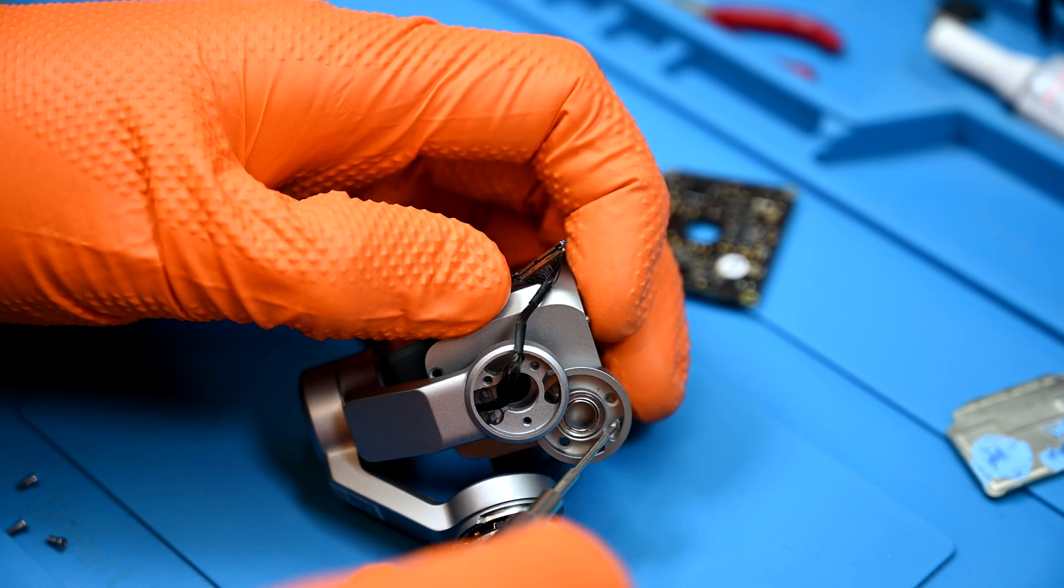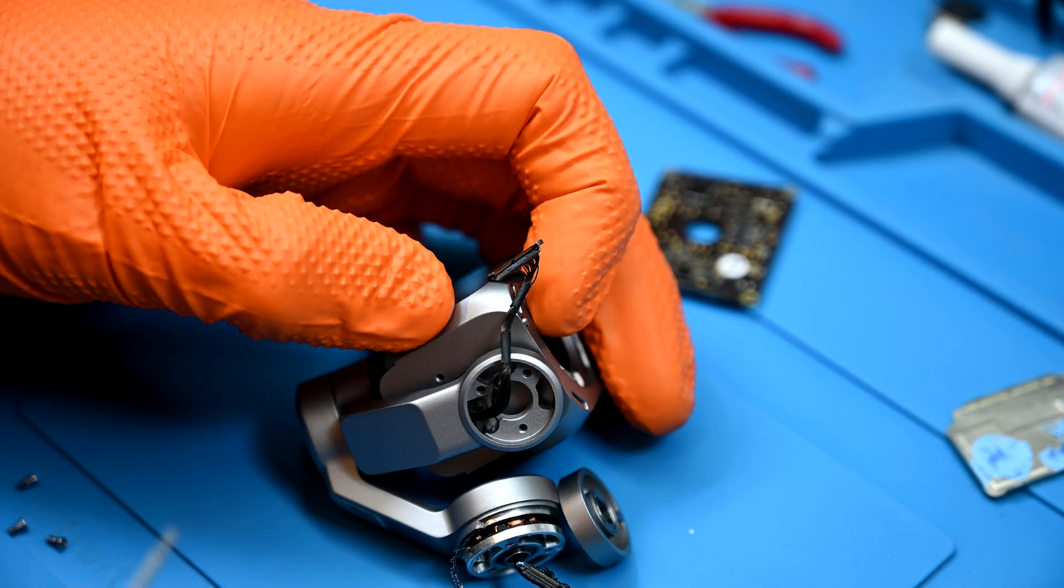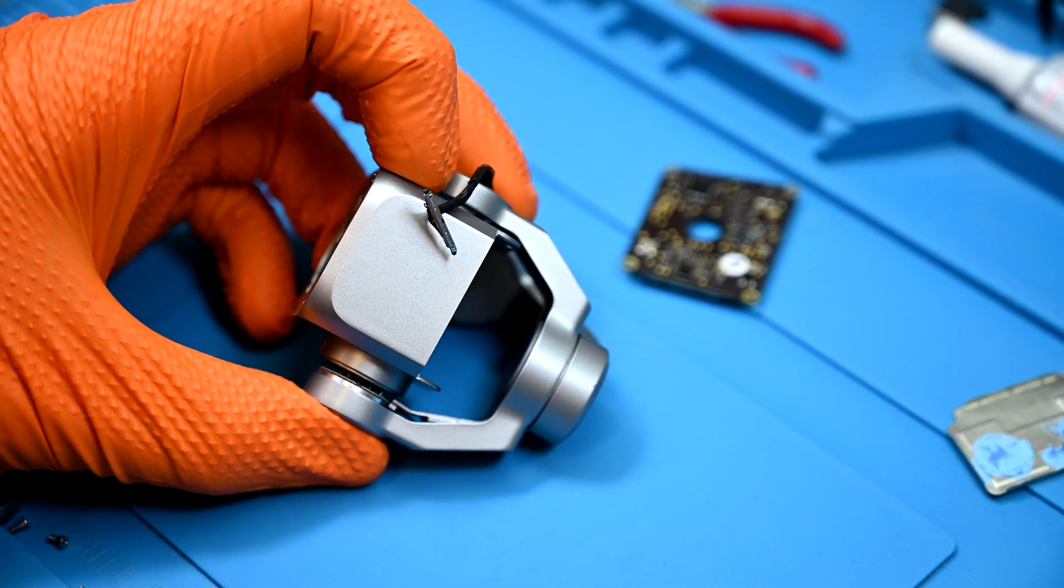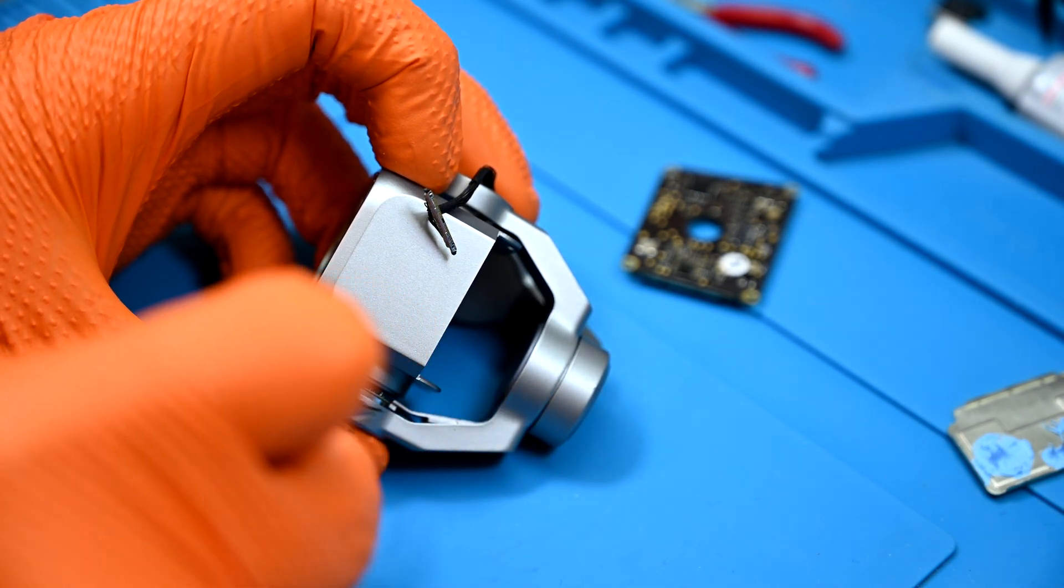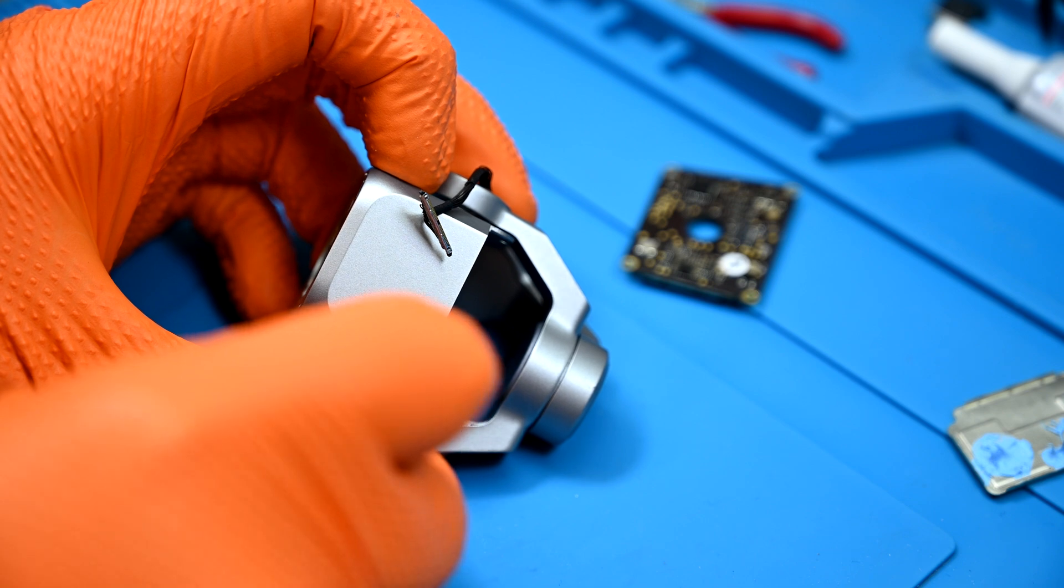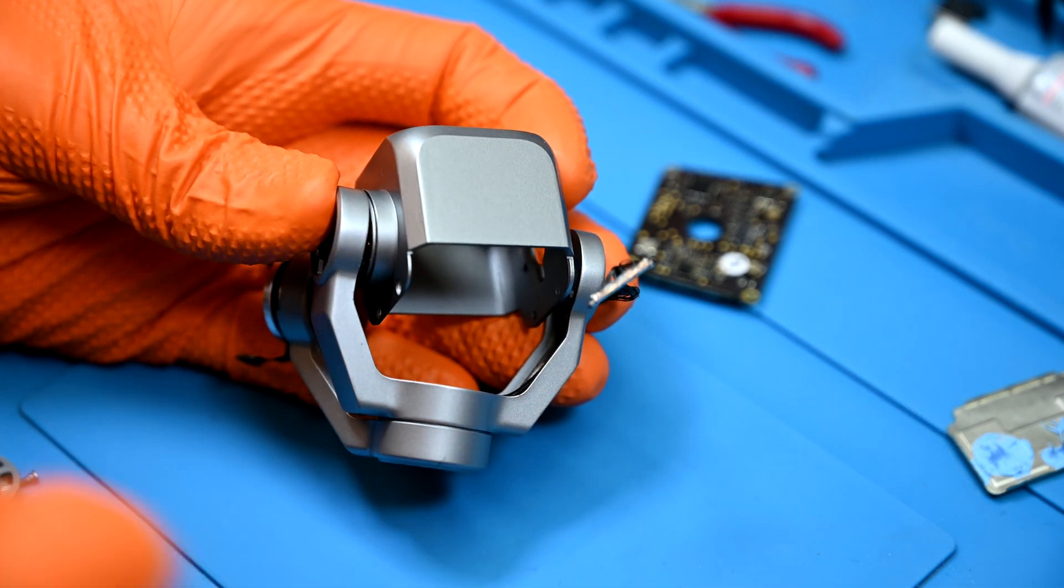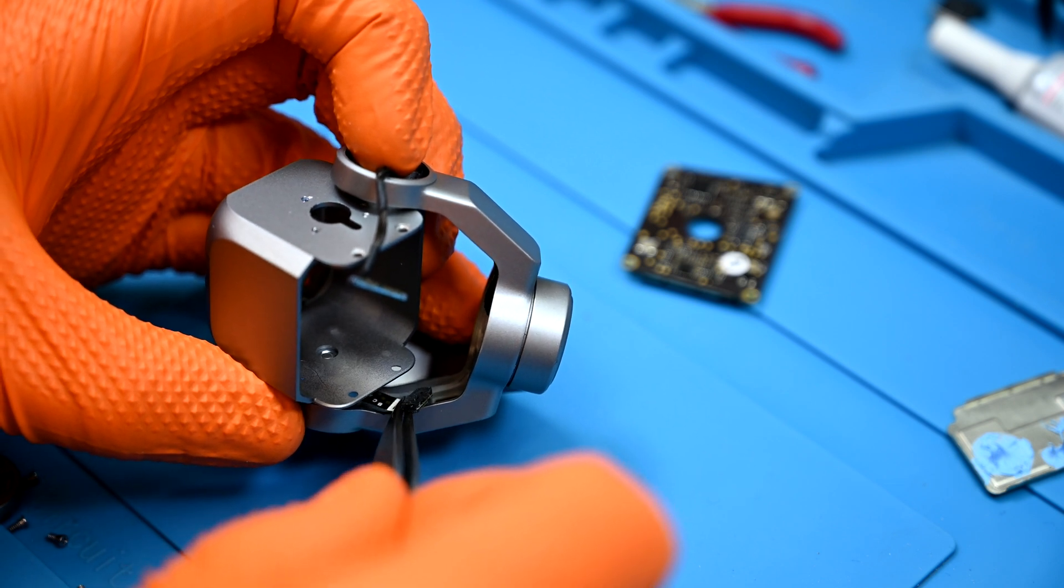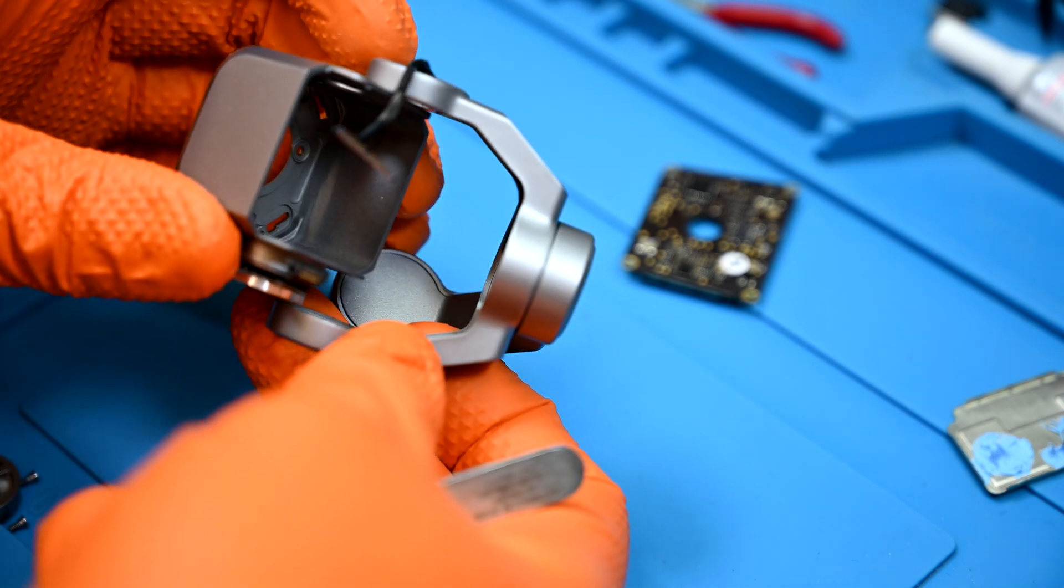This extra thick washer can then slide out and be set near what I'm officially calling the puzzle piece. This is nearly impossible to show on camera but a large U-shaped plastic panel covers the inside of the arms and needs to be popped out from either side to reveal the wiring below. The roll motor has a short ribbon with a lego connection that needs to be disconnected here before the camera housing is removed.